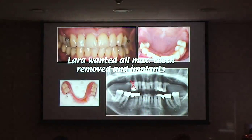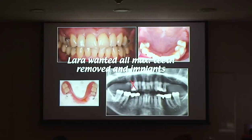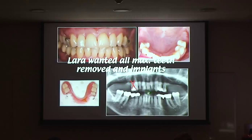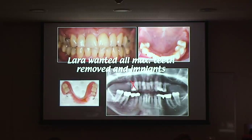The other thing of course is that she needed a graft - you can see here there's not enough. She needed a sinus lift and grafts. Now, you could have done all-on-four or all-on-six and avoided sinus lifts, but to do that you'd have to take these anterior teeth out. There's no way I'm taking those out because I don't know any implants that have marginal tissues like that. So she had grafting.